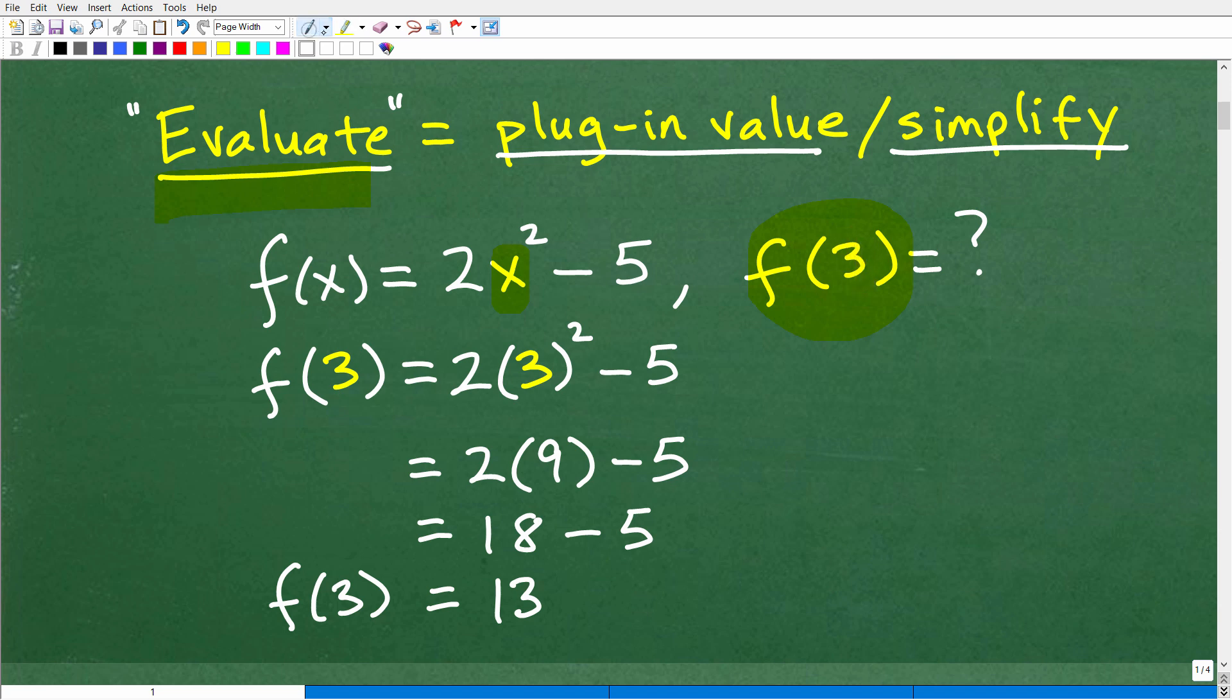Anytime you see a function and you're trying to evaluate a function, this little number in the parentheses right there means replace whatever variables you have in that function with this number. So here I see the x, I'm going to replace it with 3.